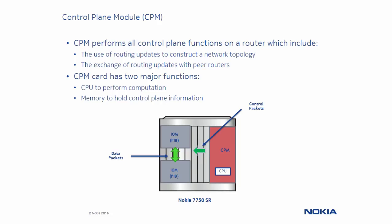The CPM also maintains states for multiple internal and external processes. As an example, BGP neighbor states and OSPF adjacency states are all maintained by the CPM. The CPM card has two major functions: to perform computation and memory to hold control plane information.